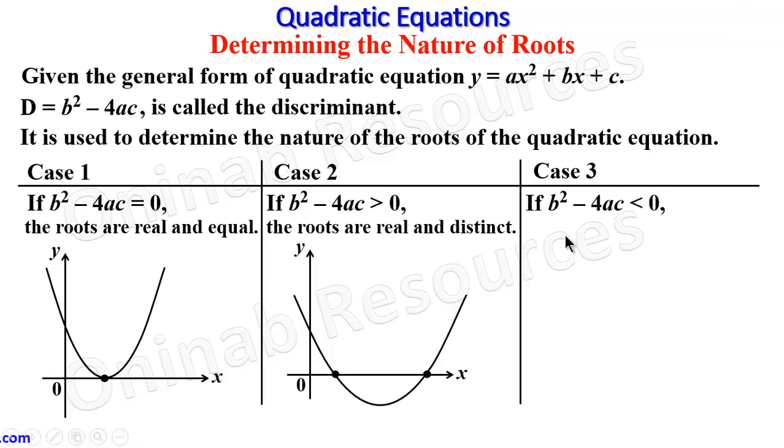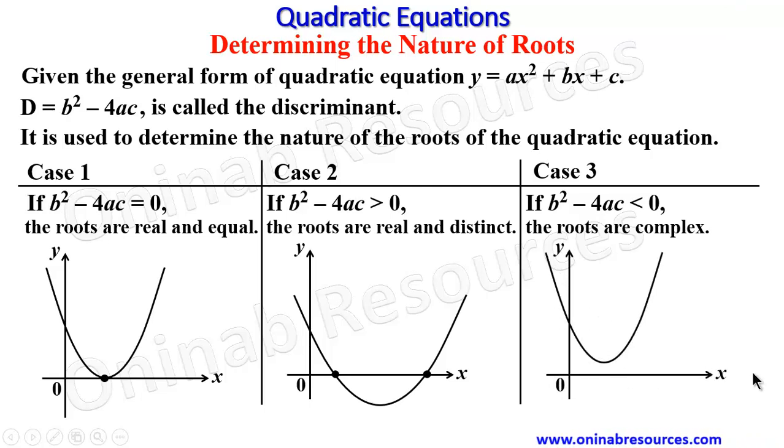Then the third case. If b² - 4ac < 0, if it is negative, the roots are complex. So we now have the graph. It is not touching the x-axis, so that means the roots are complex roots. This is how we know the nature of the roots.